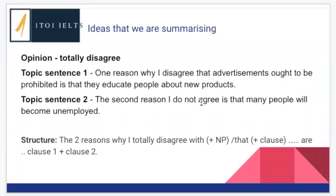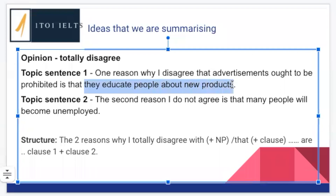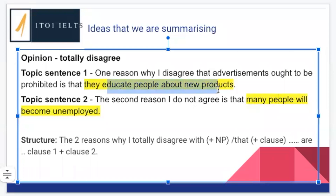We have two topic sentences which contain our main ideas. Topic sentence one mentions that adverts educate people about new products. We are totally disagreeing that there should be a ban, by the way. Topic sentence two says many people will become unemployed — this was our second idea. These are the two ideas we're going to be restating. What is the most logical order to address them? Nabila says the same as the intro and the main body paragraph — good. So topic sentence one is 'educate people about new products,' topic sentence two is 'many people will become unemployed.' In our conclusion, that is the order we want to summarize our ideas, because it's a logical, coherent way of addressing this.